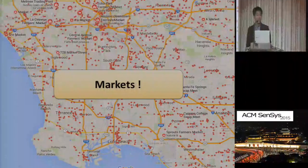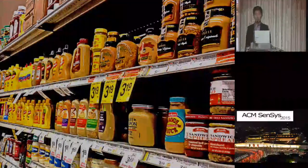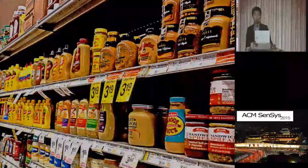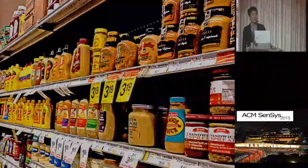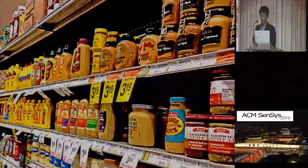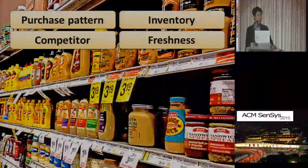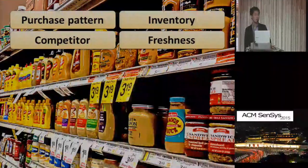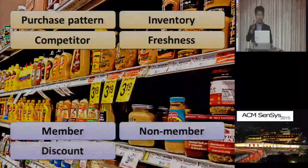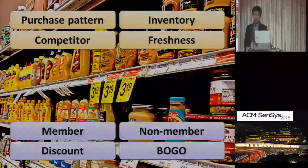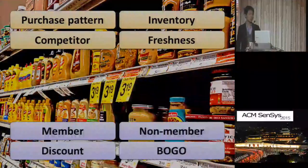Among many routine tasks in markets, our work focuses on price tags. One of the most straightforward, repetitive, time- and labor-intensive tasks is the reconfiguration of price tags. Since price has a significant effect on customer behavior, it changes very frequently depending on purchase patterns, inventory, competitive market information, and freshness. Not only that, in typical markets there are several types of prices: membership, non-member, discount, and buy-one-get-one-free. Managing these different price types manually is prone to errors.